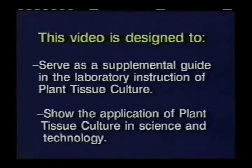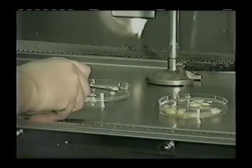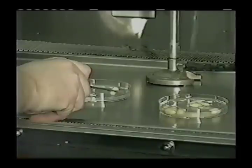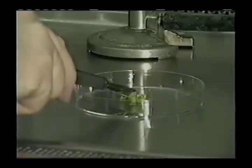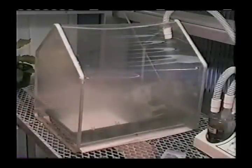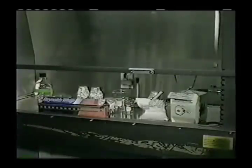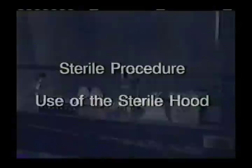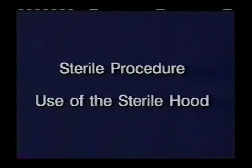In this video, we will be focusing on the very basics of plant tissue culture techniques: initiation of a culture from a primary explant, shoot initiation and micropropagation, and rooting and acclimatization. We assume that you are already familiar with sterile procedure and the use of a sterile hood. For a review of these procedures, please refer to two of the other videos in this series — Sterile Procedure and the Use of the Sterile Hood.